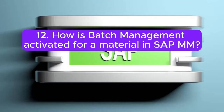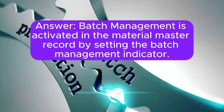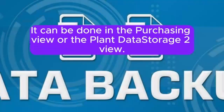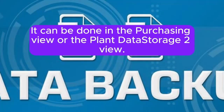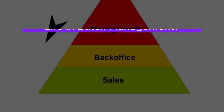Question 12: How is batch management activated for a material in SAP MM? Answer: Batch management is activated in the material master record by setting the batch management indicator. It can be done in the purchasing view or the plant data/storage view.